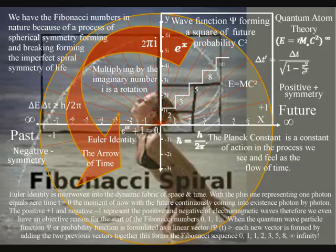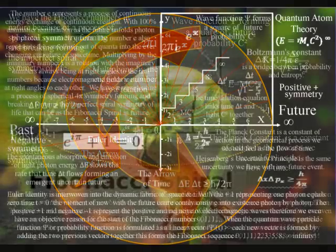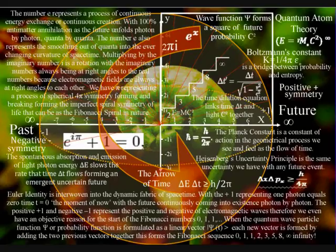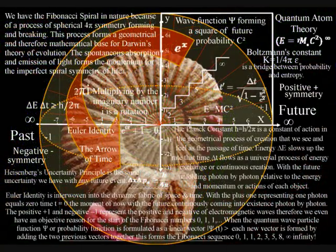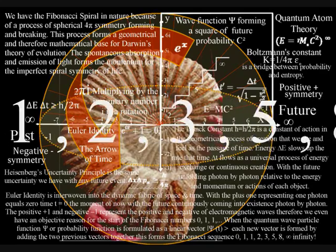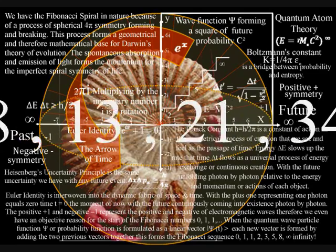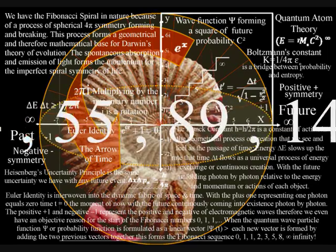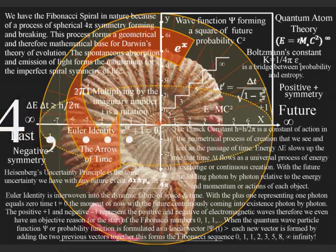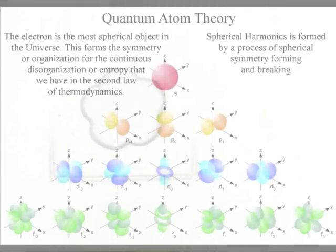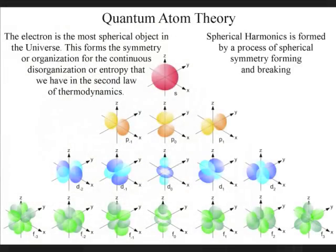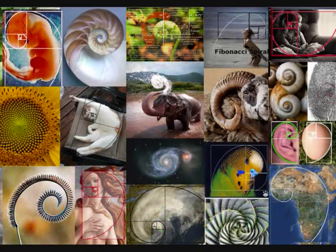When the quantum wave particle function or probability function is reformulated as a linear vector, each new vector is formed by adding the two previous vectors together. This forms the Fibonacci sequence. At the most fundamental level, this represents a process of spherical symmetry forming and breaking, that forms the imperfect spiral symmetry of life that can be seen as the Fibonacci spiral in nature.